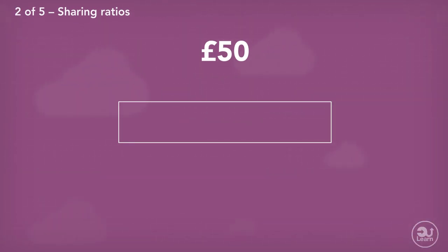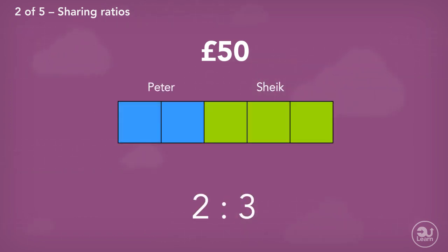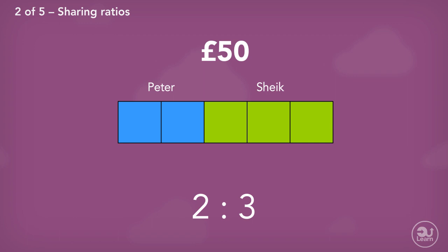Let's say I want to divide that 50 pounds between two friends with the ratio 2 to 3. We've been given an amount to divide into two different uneven pieces. The first side is made up of two parts, and the second side is made up of three parts. So this tells us that the second side will end up being bigger than the first side.